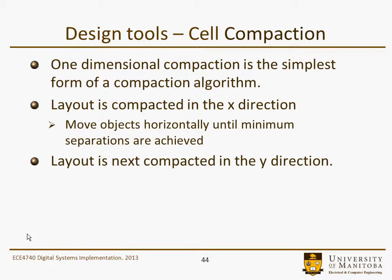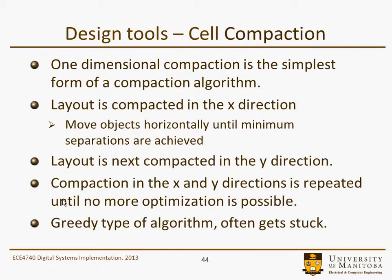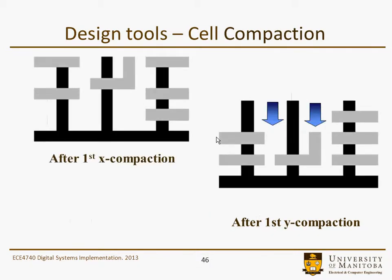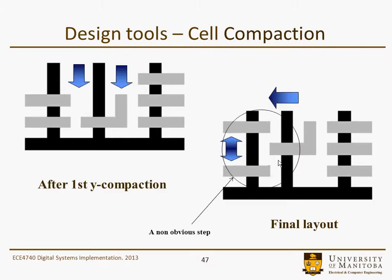Here's an example of one-dimensional compaction — not very sophisticated and not used widely. The layout is compacted first in the x direction, then in the y direction, repeated until no further area reduction is gained. It's a greedy algorithm and often gets stuck at a less-than-optimal solution. For example, starting with plopped-down transistors, they are squeezed together in x as close as possible without violating design rules, then compacted in y, yielding a smaller overall area.